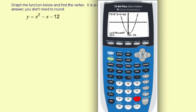And this is left bound. Now we want to be to the left of the vertex, and it looks like we are for sure, so I'm going to hit enter. Then it says right bound, so I want to go to the right of the vertex. I'll hit the right arrow a bunch of times to get past the vertex.